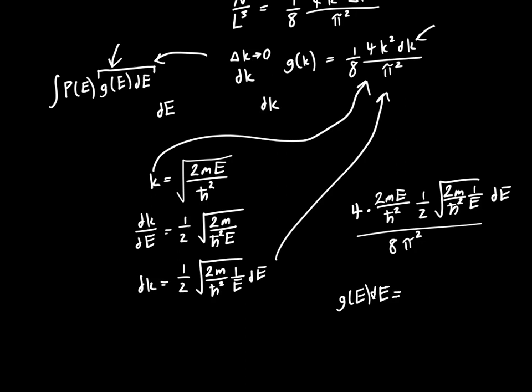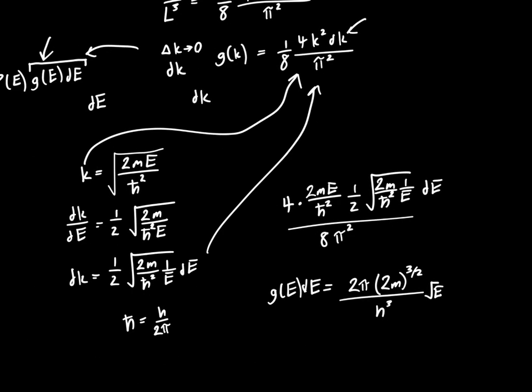we'll get that g of e times dE is equal to 2 pi times 2m to the 3 halves over h-cubed, and that's not h-bar anymore, that's h-cubed. h-bar is just h over 2 pi. Makes things a lot more convenient sometimes, times the square root of e. All times dE.